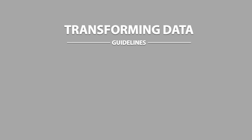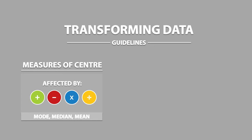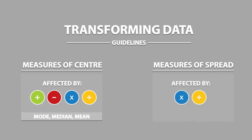When we are dealing with transforming data, there are some guidelines we can follow. Measures of center are affected by addition, subtraction, multiplication, and division — so basically every mathematical operation. Measures of center include the mode, median, and mean. For measures of spread, they aren't affected by additive or subtractive terms. However, measures of spread are affected by multiplication and division. The measures of spread we have talked about include things like range and standard deviation.